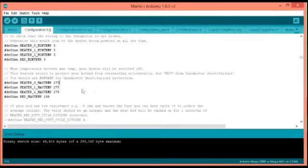Now go down to line number 113. Change this 275 to 300. Now save and upload this onto your Arduino board.